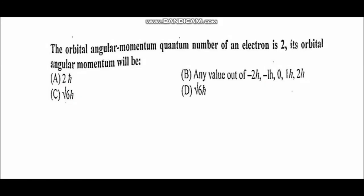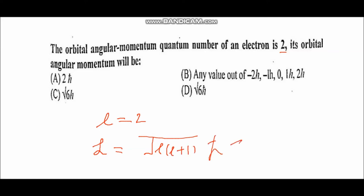Next question: the orbital angular momentum quantum number of an electron is 2. Its orbital angular momentum will be found using the formula L = √(l(l+1)) ħ. With l = 2, we get L = √(2×3) ħ = √6 ħ. The correct answer is √6 ħ.